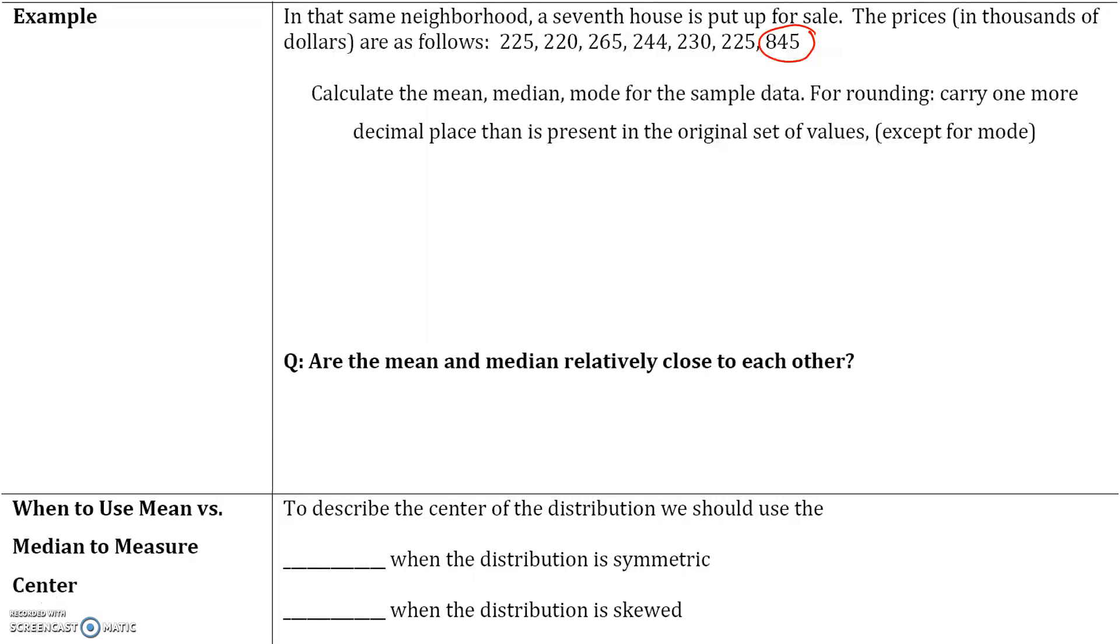Now let's see how the outlier is going to affect the mean and the median. Let's first calculate the mean. Just like before, we add up each of the data values: 225, 220, 265, 244, 230, 225, and 845. This time we have 7 houses for sale, so we divide by 7, and our mean is 322.0.